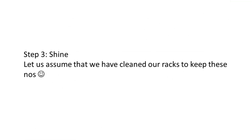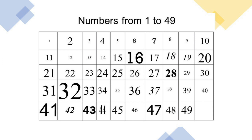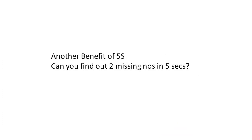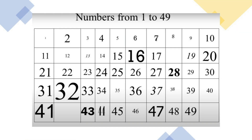The third step is shine — clean the racks holding these numbers. Then standardize: create a rack for each number, so 1, 2, 3, 4, 5, 6, 7, 8, 9, 10 are all in their designated places. Now the team will not take more than 5 seconds to identify all numbers from 1 to 49. With 5S implementation we can find these numbers within 5 seconds, whereas before we could not identify them even in one minute. There is another benefit: if two numbers are missing, you can identify number 18 and 42 are missing — showing how 5S helps the team save time and spot abnormalities.